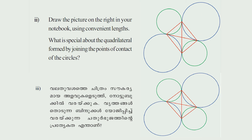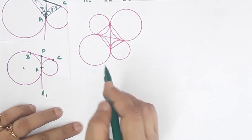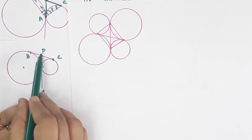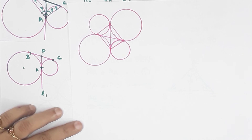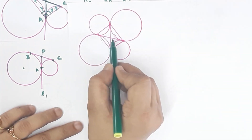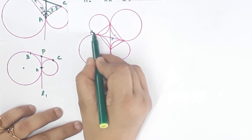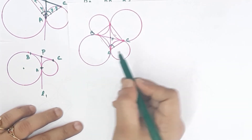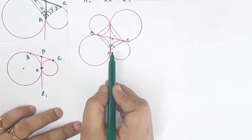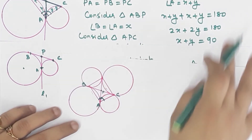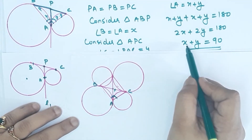Third question: draw the picture in your notebook using convenient lengths. What is special about the quadrilateral formed by joining the points of contact? In the second figure with right triangle, joining contact points A, B, C, P: since PB equals PA equals PC, angle A equals 90 degrees, which we proved as x plus y equals 90 degrees.